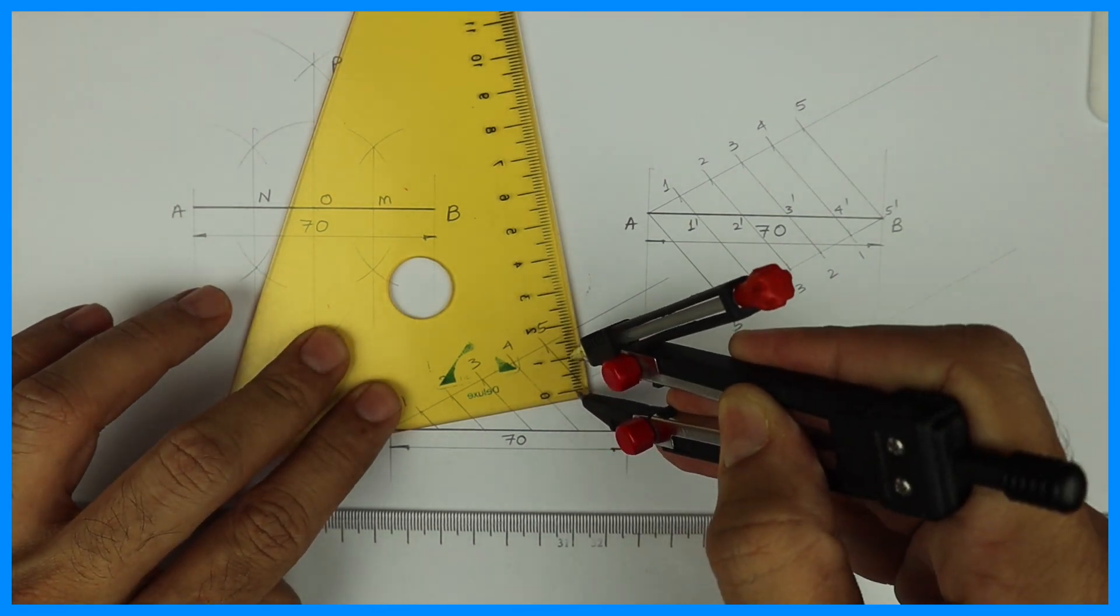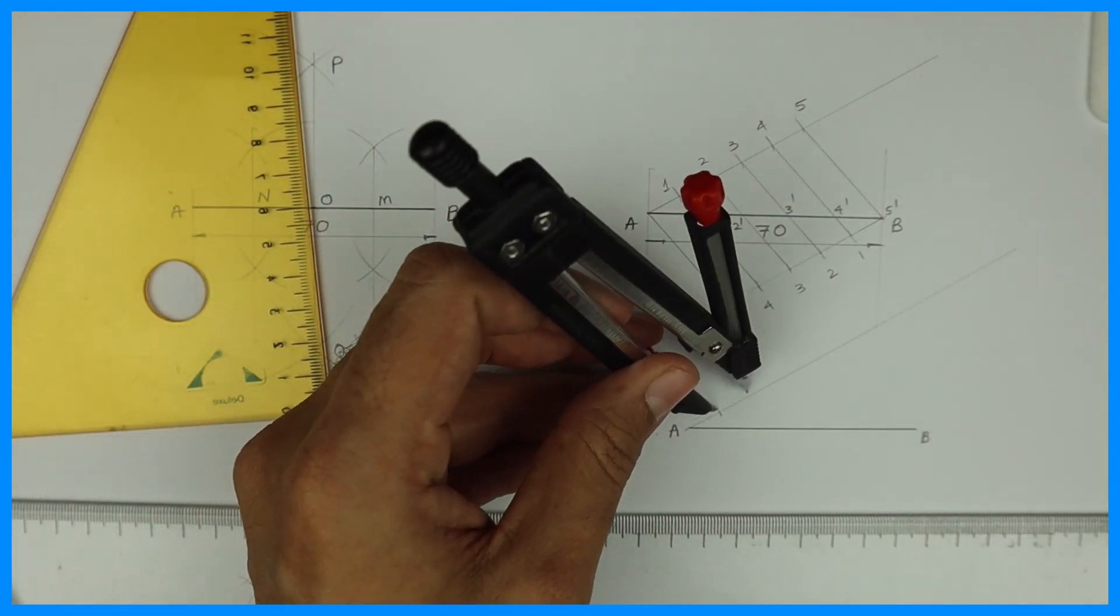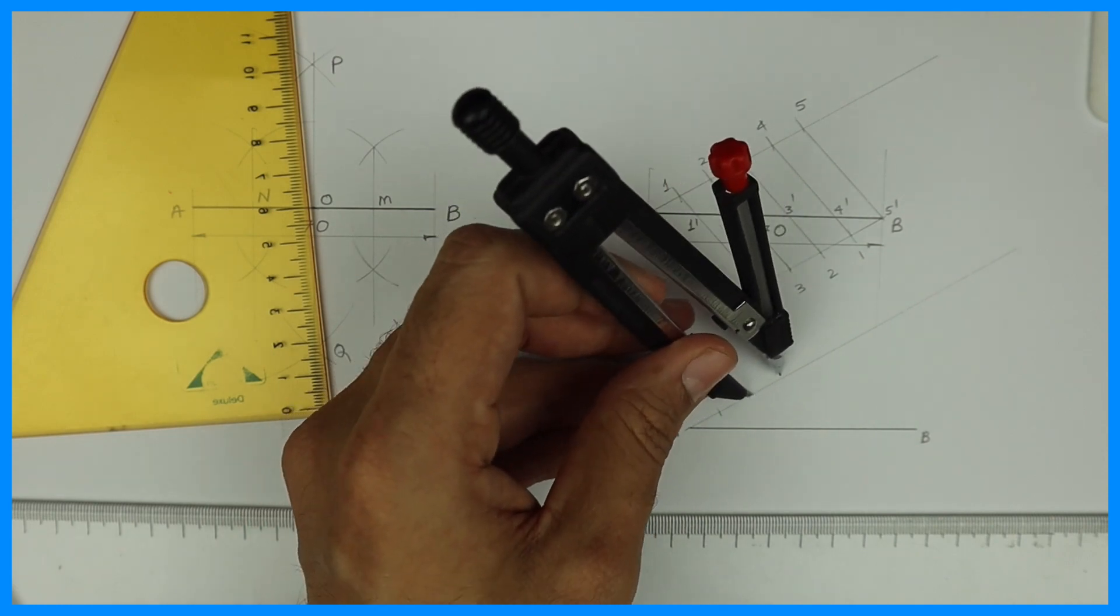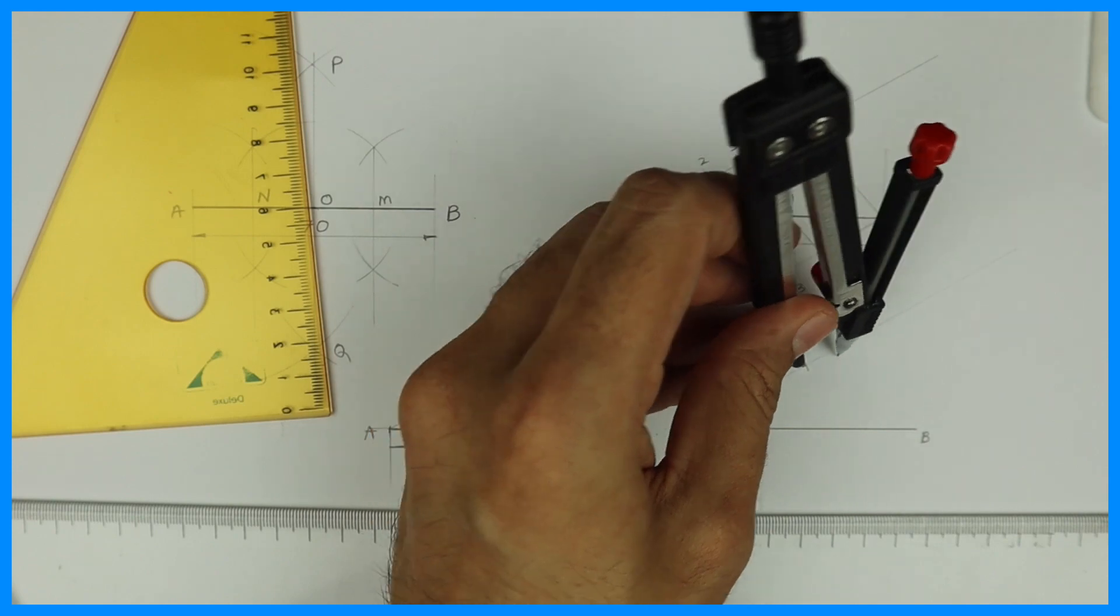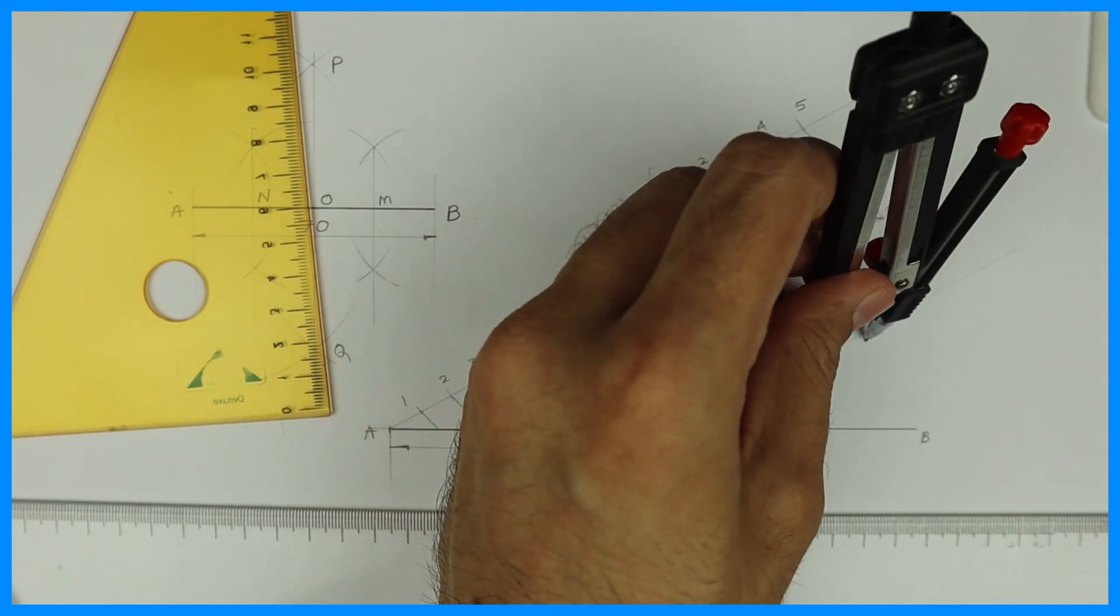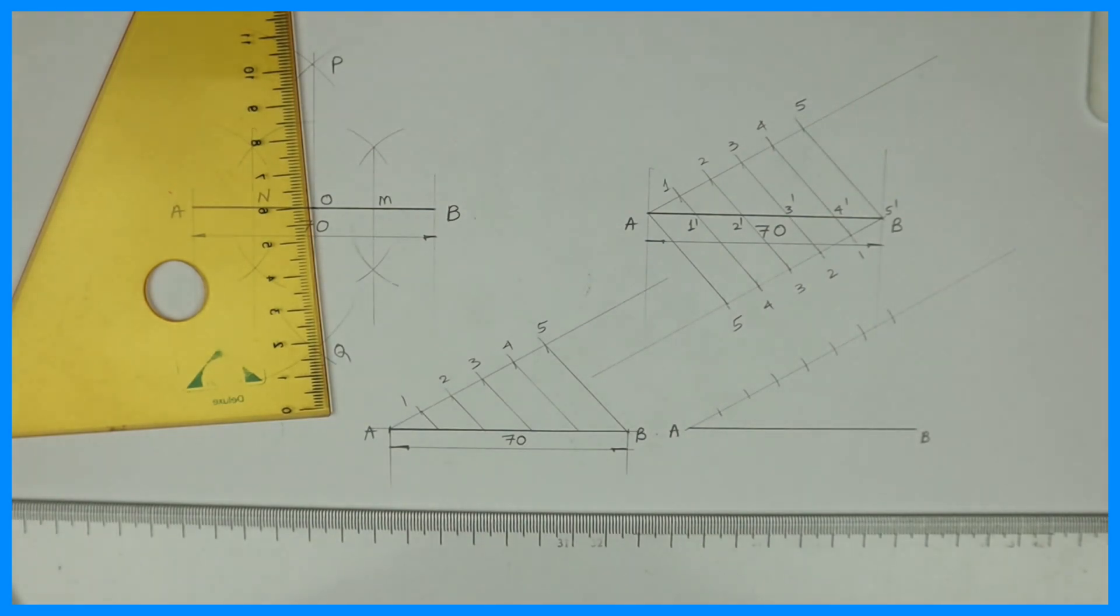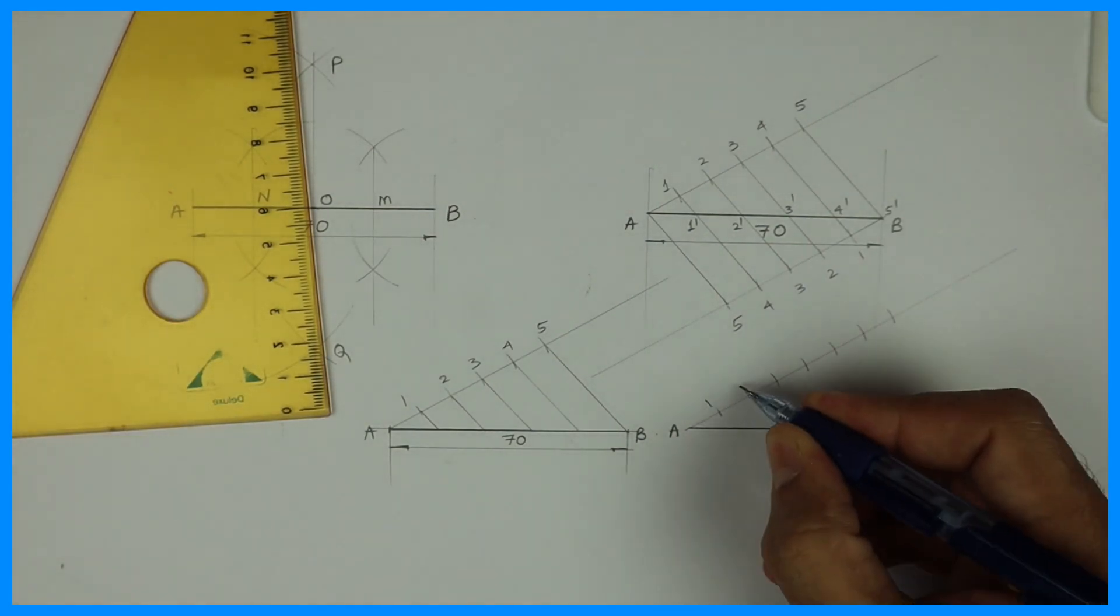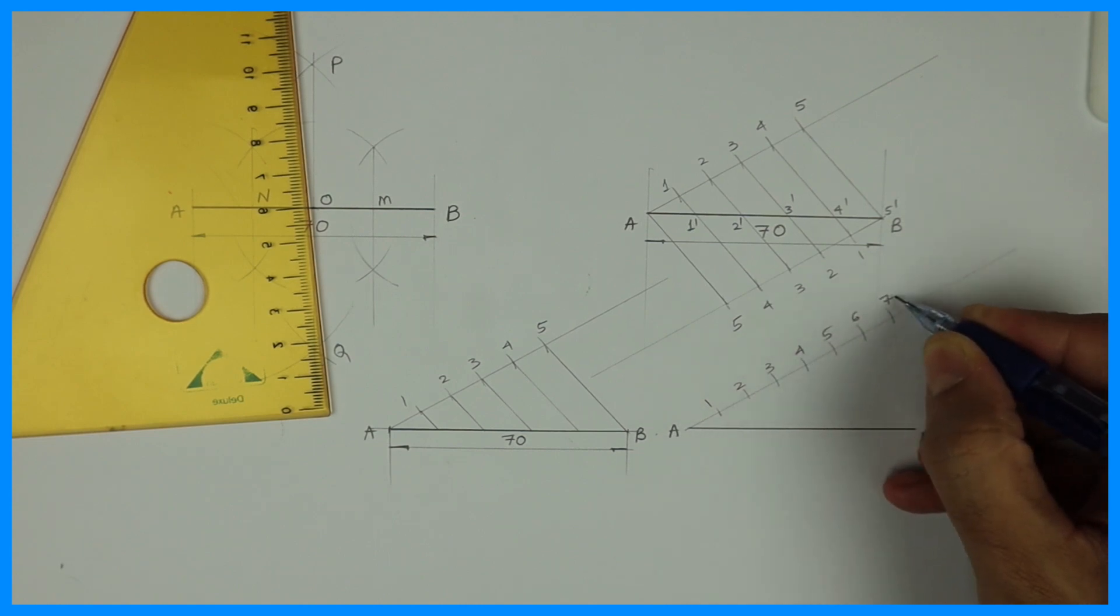Again you take 1 centimeter which is 10 millimeter in your compass and you cut now 7 times. Because you want to divide the line into 7 parts. So the method will remain same. If you want to do 8 parts then you cut 8 times. If you want 6 parts then you cut 6 times. 1, 2, 3, 4, 5, 6, 7.